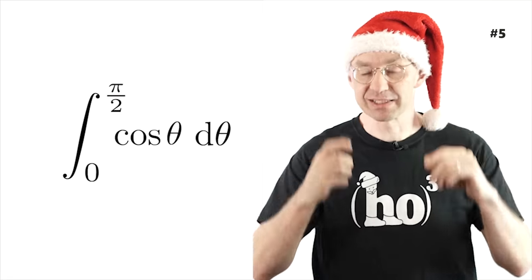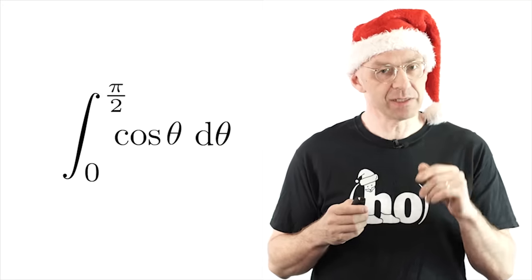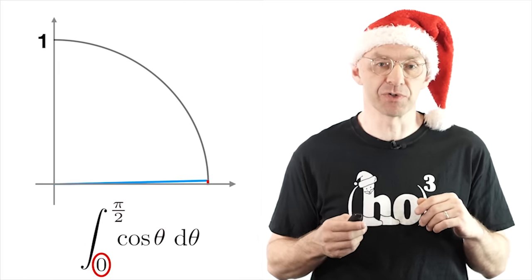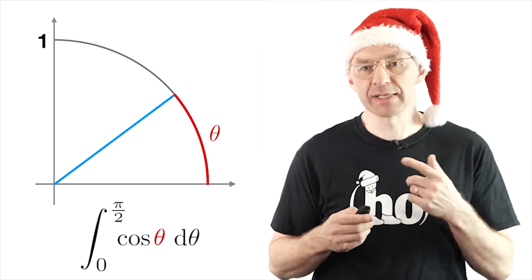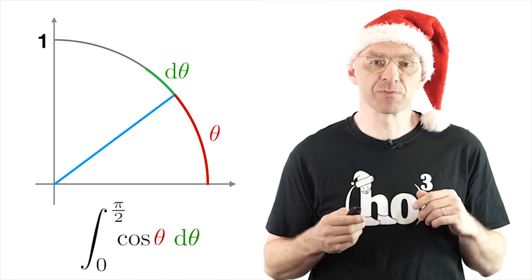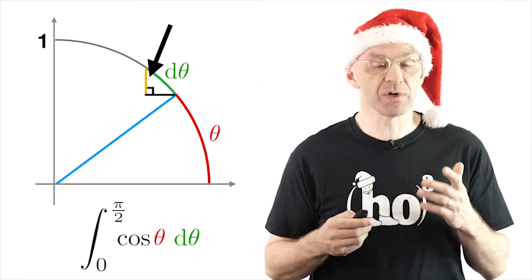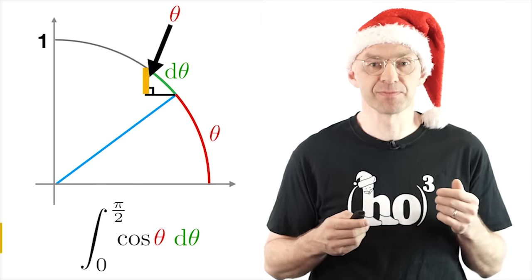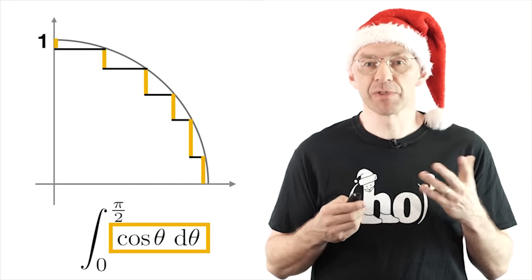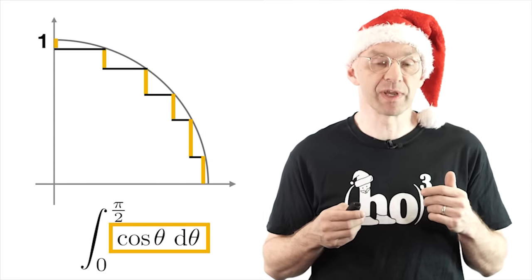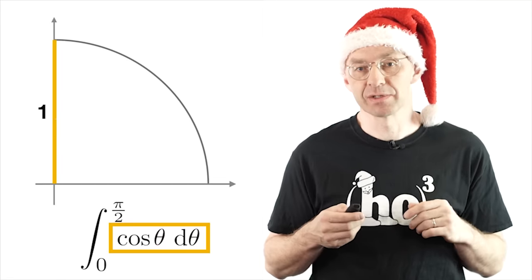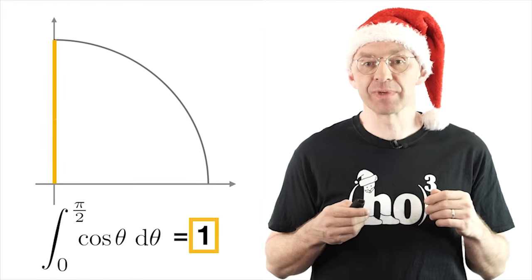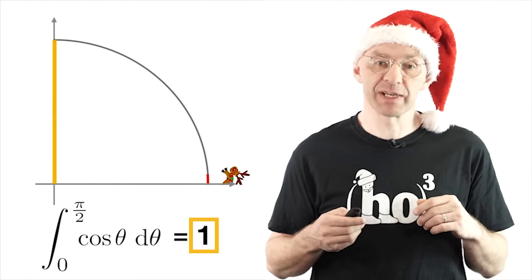Here's a nice heuristic method to see at a glance what the value of this integral is. Here's a quarter of a unit circle; the angle theta ranges from 0 to pi/2. For one of those angles with corresponding d theta, since d theta is infinitesimal, the angle here is also theta, meaning the orange segment equals cos(theta)·d theta — which is the quantity we're summing. Those orange segments clearly have total length equal to the radius of our circle, so the integral equals 1. Challenge: fill in the details to make this rigorous in the comments. Fröhliche Weihnachten aus Australien!